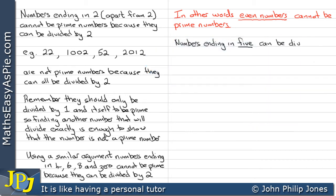Numbers ending in 5 can be divided by 5. So apart from 5, which is prime, any number ending in 5 cannot be a prime number.